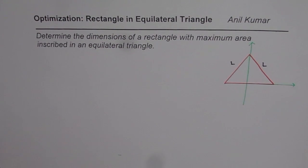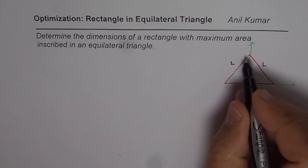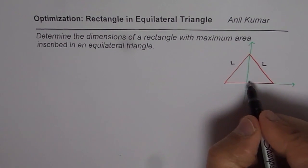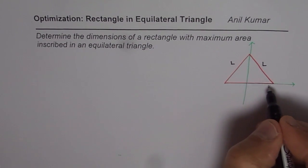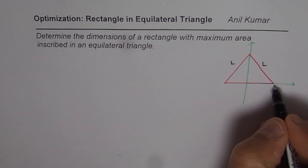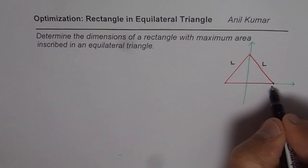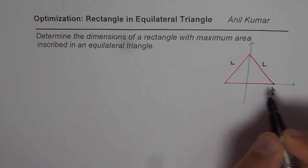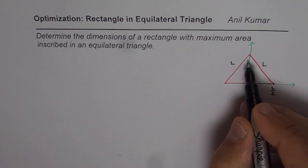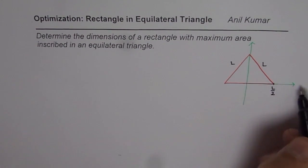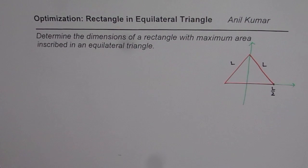In that case, if I drop a perpendicular, this length will be L over 2 — half and half. So I will write this as L over 2 here. I am taking the base of the triangle along the X axis and the height of the triangle along the Y axis.